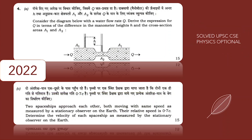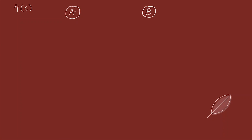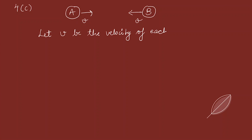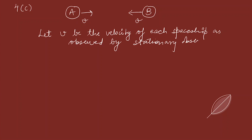Moving to the second question: two spaceships are approaching each other, both moving at the same speed as measured by a stationary observer on Earth. The relative speed between the two spaceships is 0.7c. We have to determine the velocity of each spaceship as measured by the stationary observer on Earth.